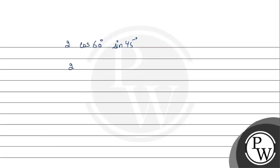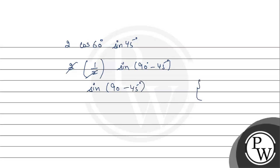This equals 2 into cos 60, which is 1 upon 2, into sin 45. Sin 45 can be written as sin (90 degree minus 45 degree). The 2 and 1/2 cancel out, leaving sin (90 minus 45) degree. We know that sin (90 minus theta) equals cos theta.